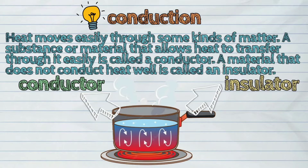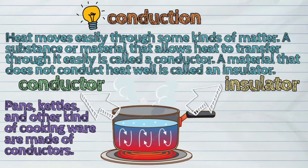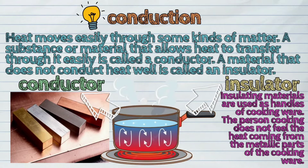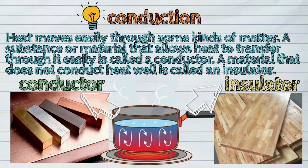Conductors and insulators have many uses. Pans, kettles, and other kinds of cooking ware are made of conductors. They conduct heat so the food cooks evenly. Insulating materials are used as handles of cooking ware, so the person cooking does not feel the heat coming from the metallic parts of the cooking ware.